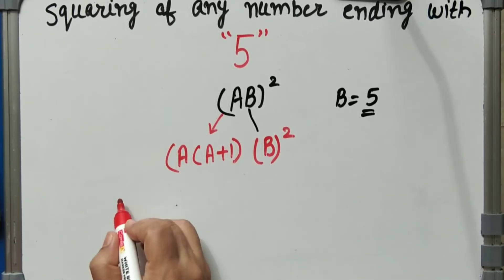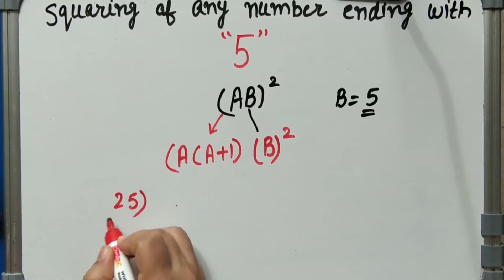Next we will take example 25 square. It means 5 square is 25. 2 into 3, that is 6, 625.